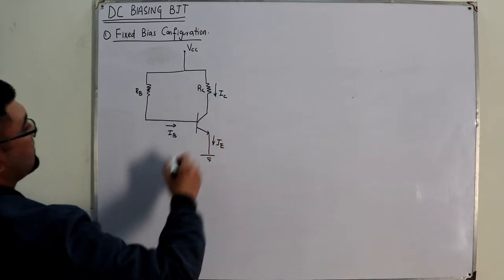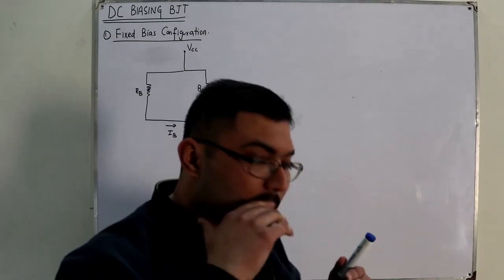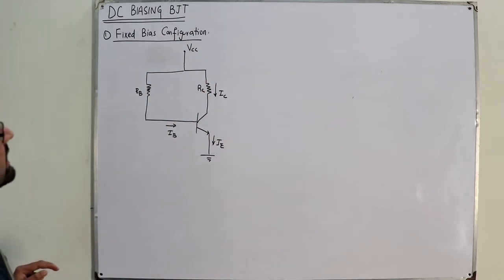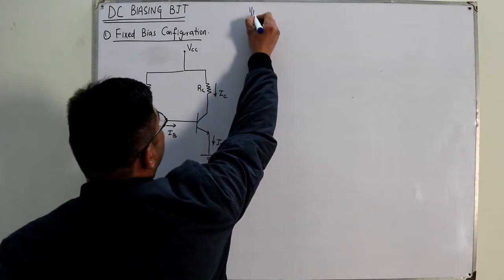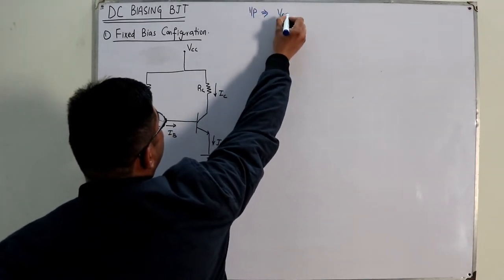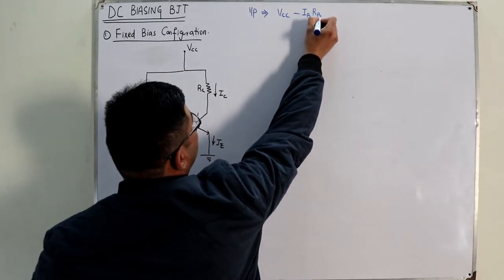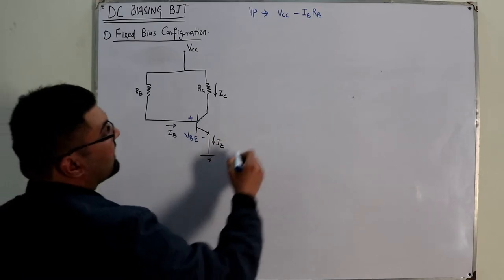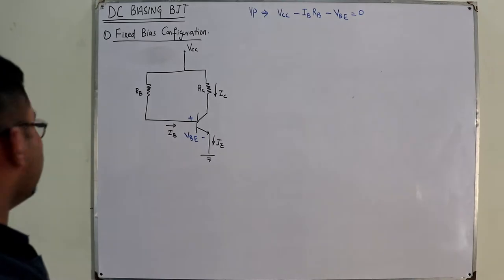We have one supply VCC. The overall analysis revolves around KVL. KVL is applied to both the input and output terminals. If you apply KVL to the input terminal, you get: VCC minus IB times RB minus VBE equals zero.